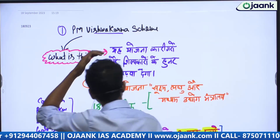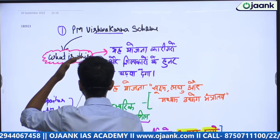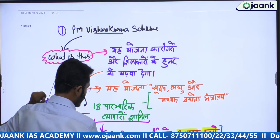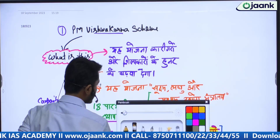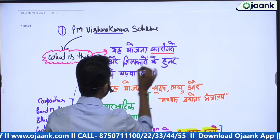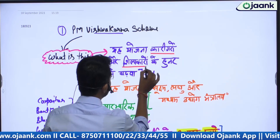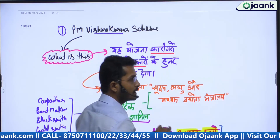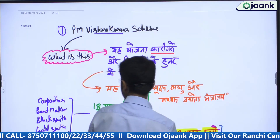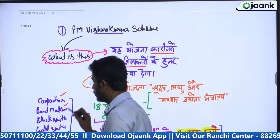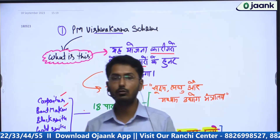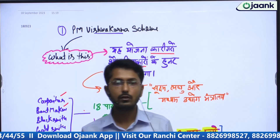Here you will see PM Vishwakarma Yojana. What is this Yojana? This scheme is for small craftsmen — Karigar, Shilpkar, or Craftsman. Which craftsmen? Carpenter, bootmaker, blacksmith (lohar), goldsmith (sonar) — these kinds of traditional artisans are the focus of this scheme.